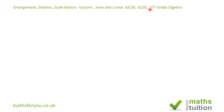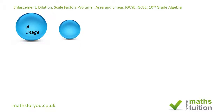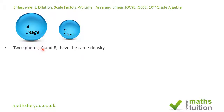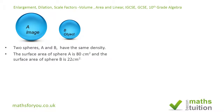This is suitable for GCSE higher tier and also for 10th grade algebra. We've got two spheres: sphere A, which we call the image, and sphere B, which we call the object. Both spheres are made from the same material and therefore have the same density — hopefully you've covered this in your science class. We're told the surface area of sphere A is 18 cm² and sphere B is 22 cm². The mass of sphere A, the larger of the two, is 80 grams, and we need to find the mass of sphere B.